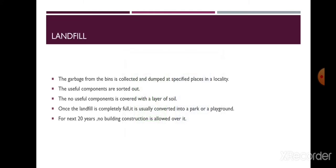Now what happens to the garbage taken away from our home? Suppose you have two dustbins — green and blue. In the green dustbin you put all your kitchen waste and biodegradable waste. You can manage it on your own as well. If you have a kitchen garden, you can make small pits and throw that garbage in those pits and cover it with soil, so after some time that waste will be converted into manure.